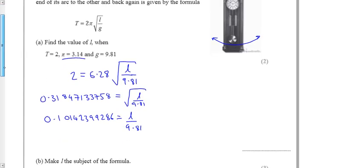And if I've got space, to get my answer of L, I'm just going to do the opposite of divide, which means I'm going to times by 9.81. And therefore, L is equal to 0.99496936995.